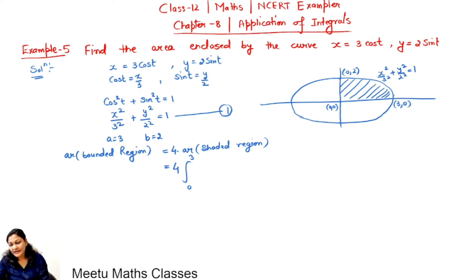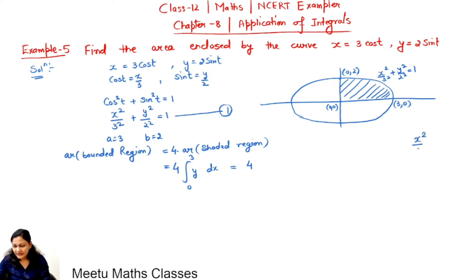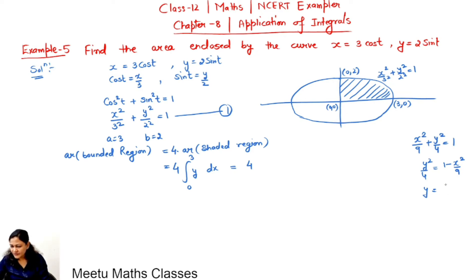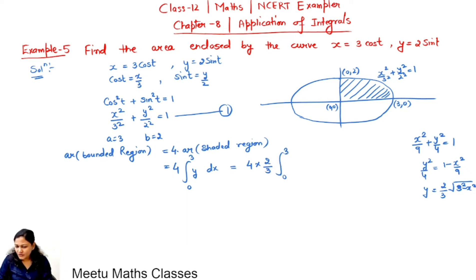For the area of the shaded region, we put the limits of x from 0 to 3. We find the value of y from the ellipse equation: y²/4 = 1 − x²/9, so y = (2/3)√(9 − x²). Substituting, we integrate (2/3)√(3² − x²) dx from 0 to 3.